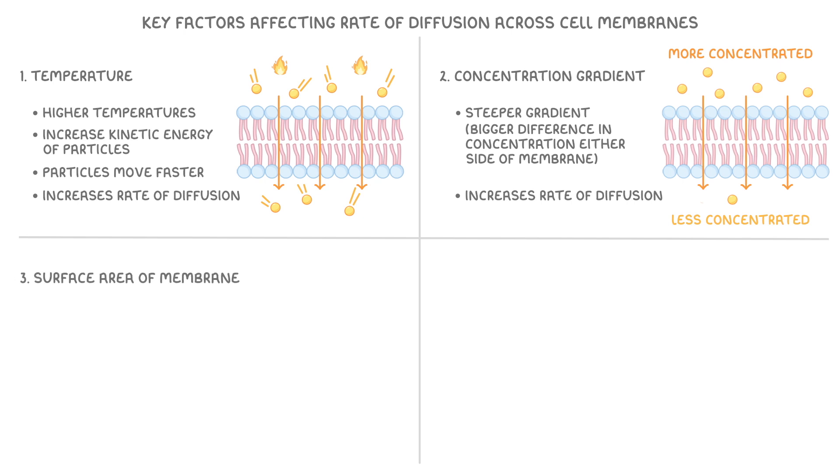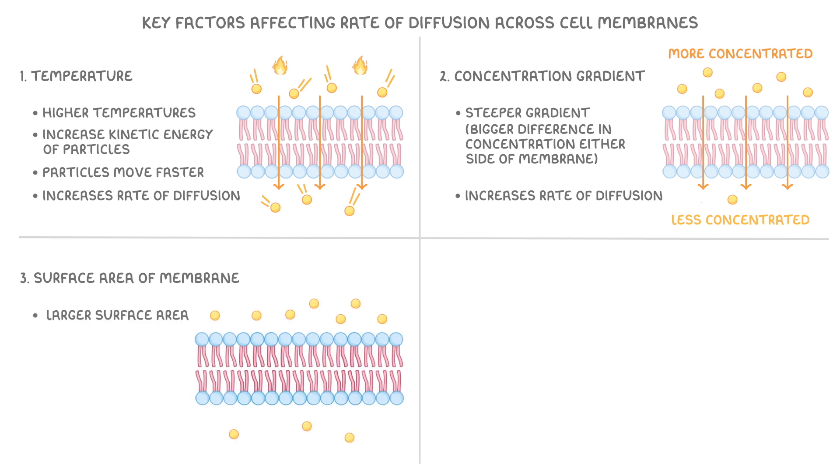The surface area of the membrane is another key factor, because a large surface area means more particles can cross at the same time, so this increases the rate of diffusion as well.